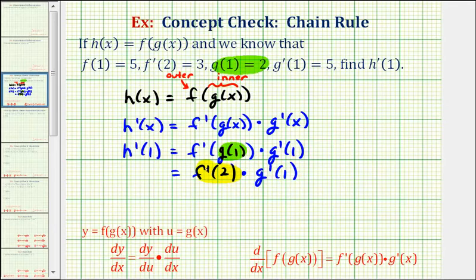Well, f prime of two is equal to positive three, and g prime of one is equal to positive five, so we have positive three times positive five, so h prime of one is equal to 15.